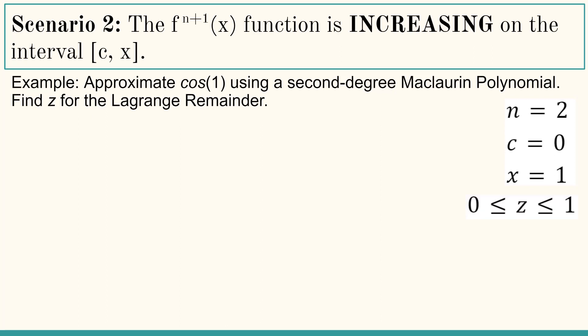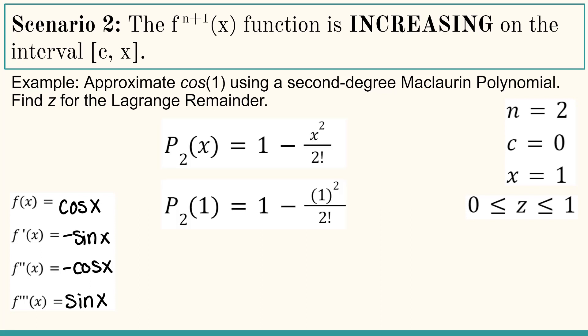This makes z between 0 and 1 inclusive. We actually did an example of expanding cosine x in our Taylor video. If we're using the second degree Maclaurin polynomial, it's going to look like this. If we plug in 1, then our approximation using the second degree Maclaurin polynomial is 0.5.